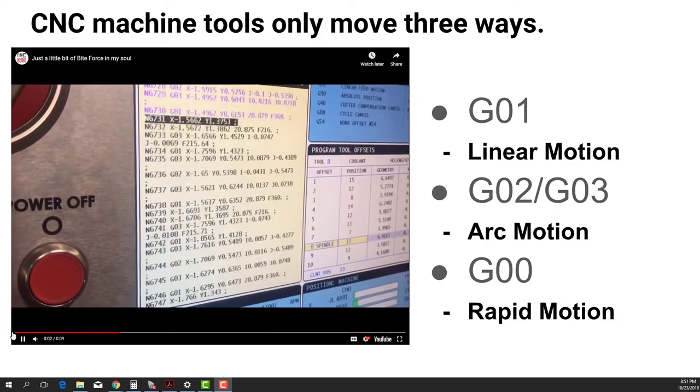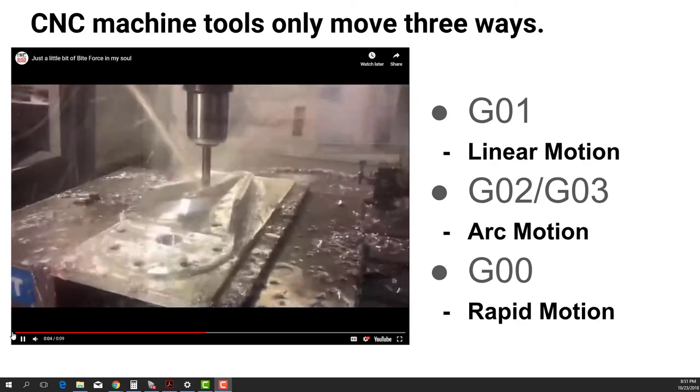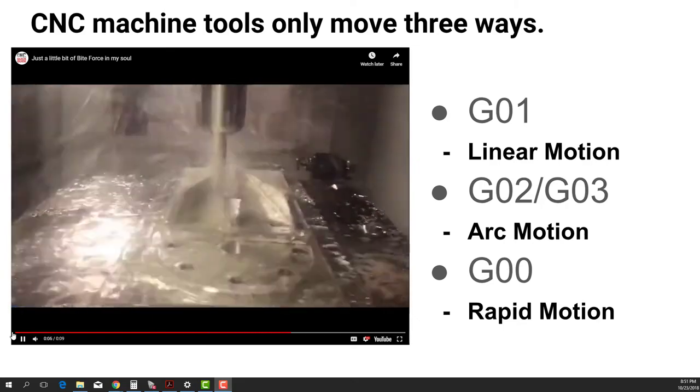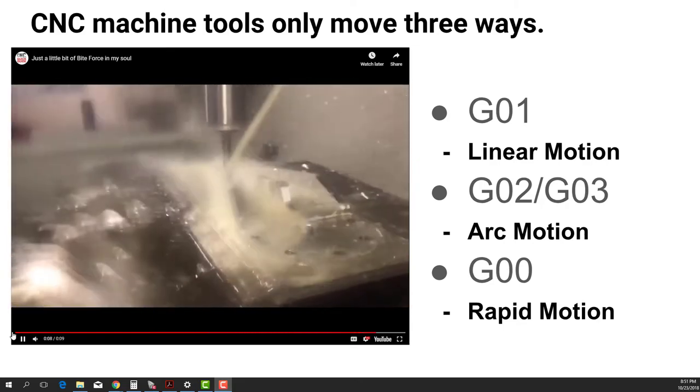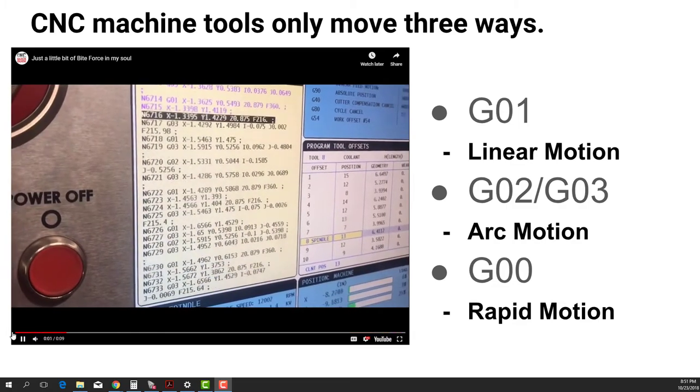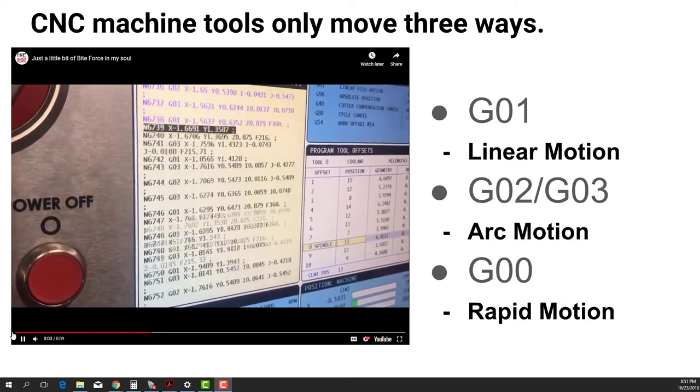When we watch a CNC machine and we see the code scrolling by on the controller and we see the complex motions that happen inside the machine, it's important to remember that these machines actually only move in three ways.